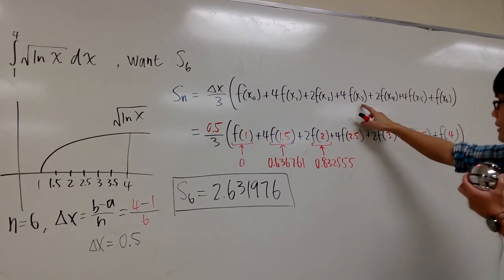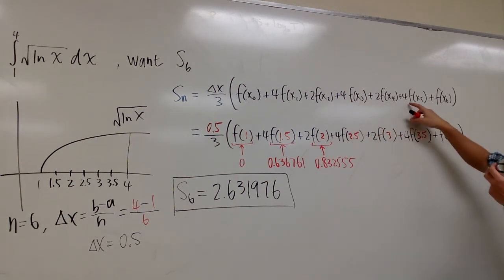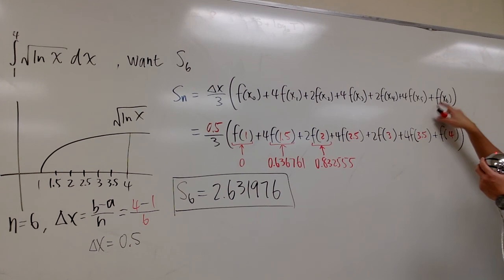This is 4 times f of x3, 2 of x of x4, 4 of x of x5, and the last one is f of x6, that's all.